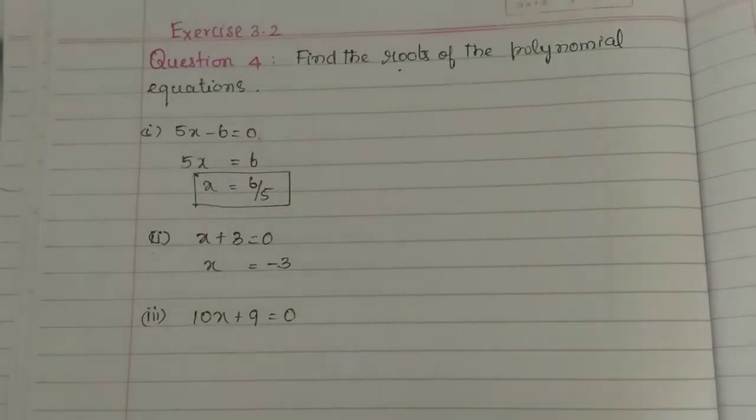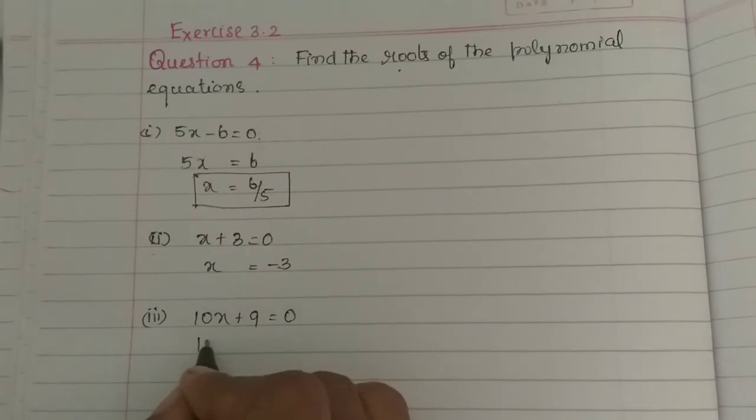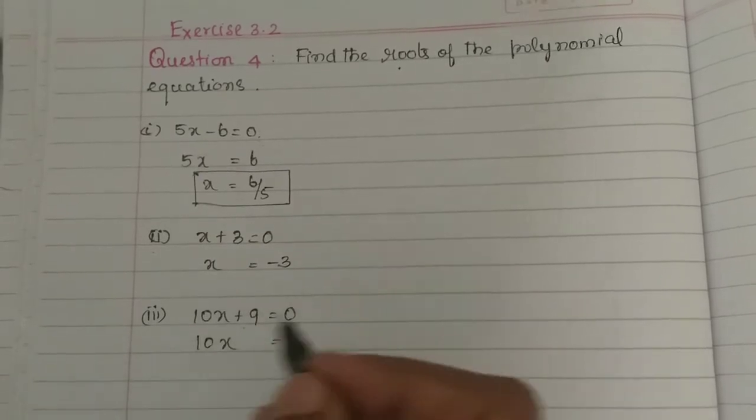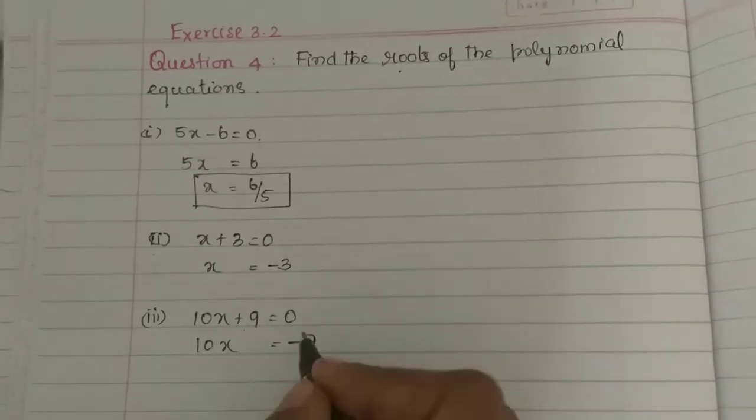Third subdivision: 10x plus 9 is equal to 0. So 10x is equal to minus 9, moving plus 9 to the opposite side.